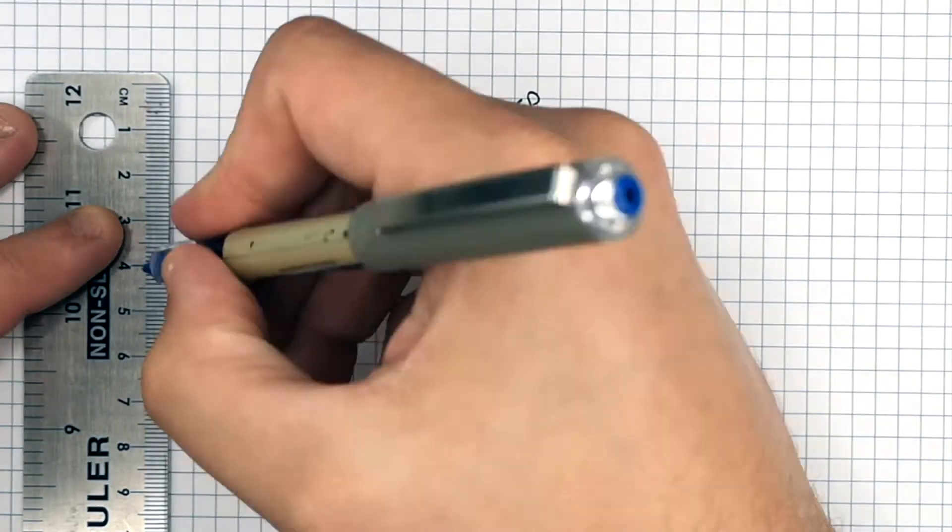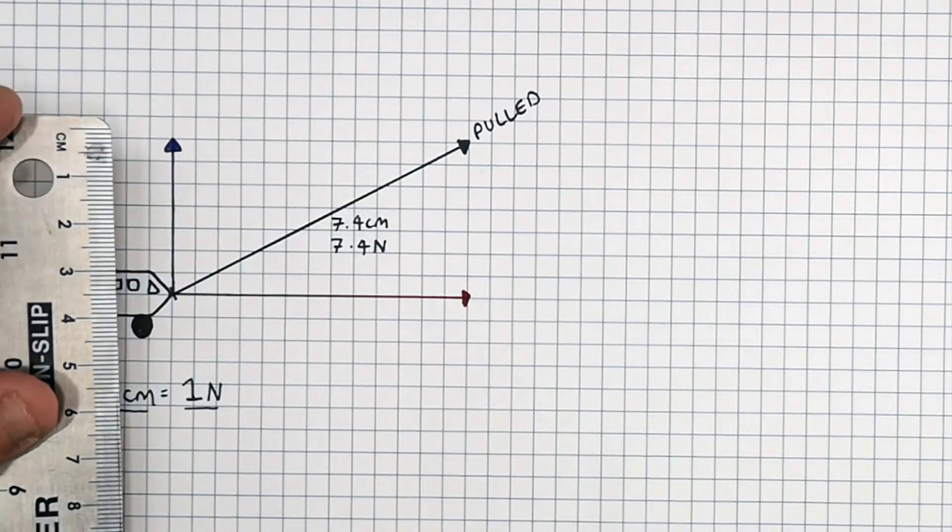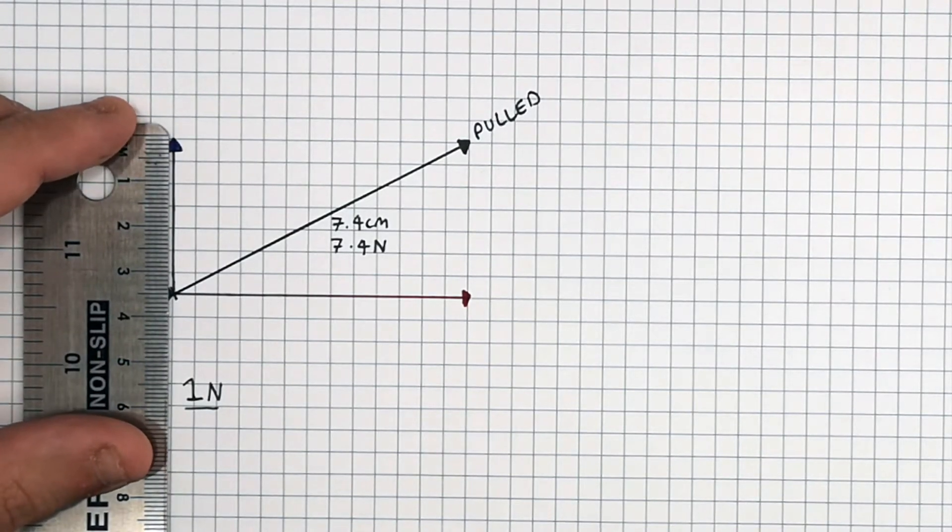Now we can measure the vertical component as we're doing here. To work out the magnitude of the force, you simply measure them and calculate the force based on the scale, where one centimeter equals one newton.